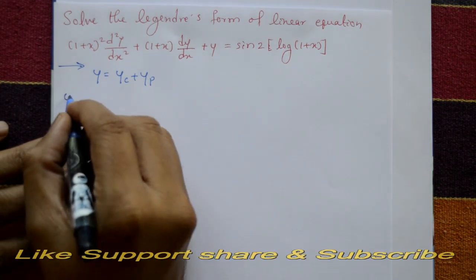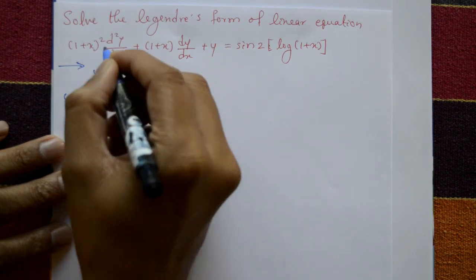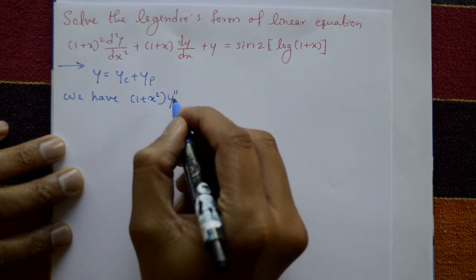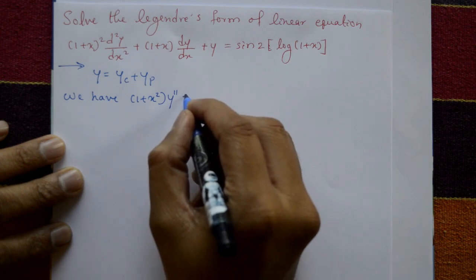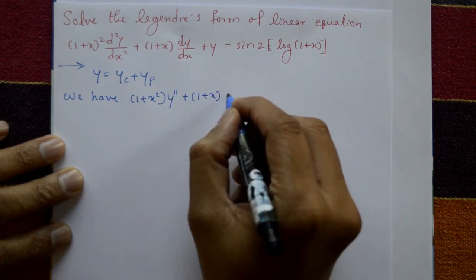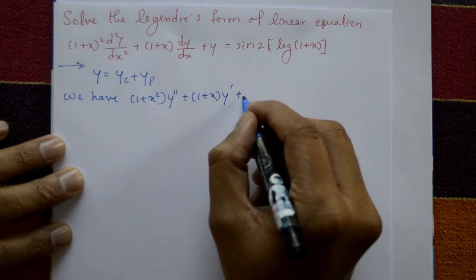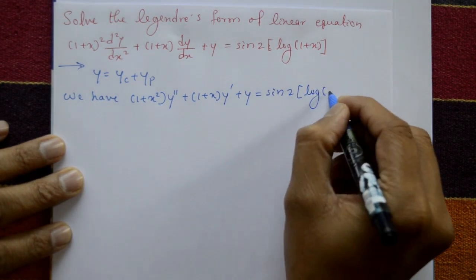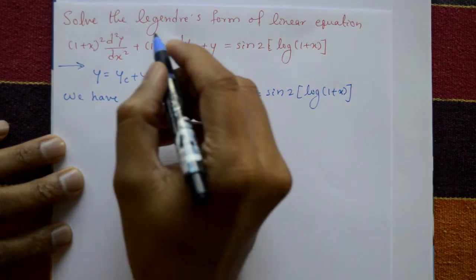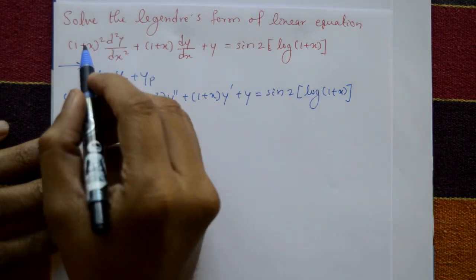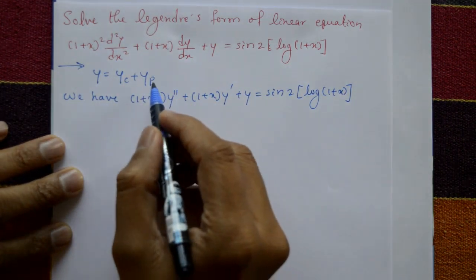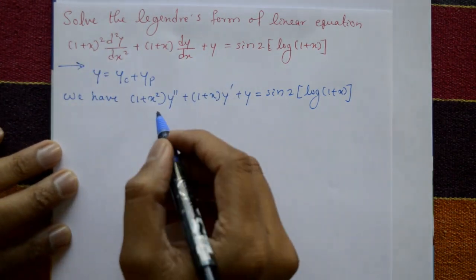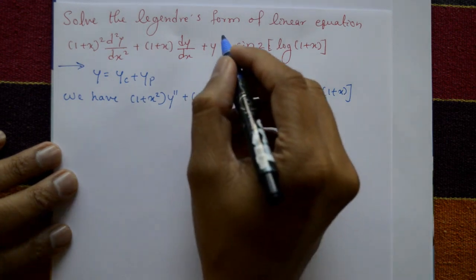We have (1 + x)² y'' + (1 + x) y' + y = sin²[log(1 + x)]. Clearly, this is a Legendre equation. Legendre means ax + b form. The standard form is ax + b, and here a means 1. This is a Legendre linear equation.